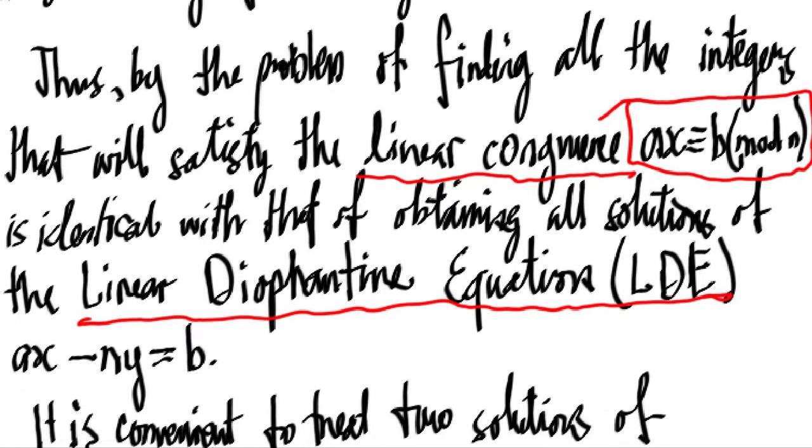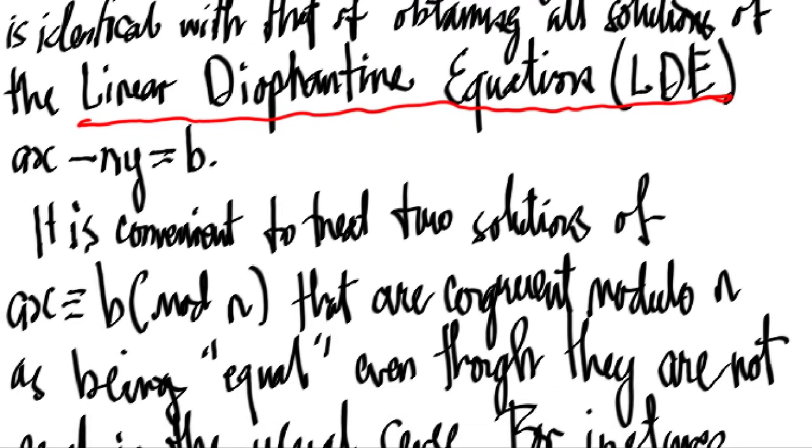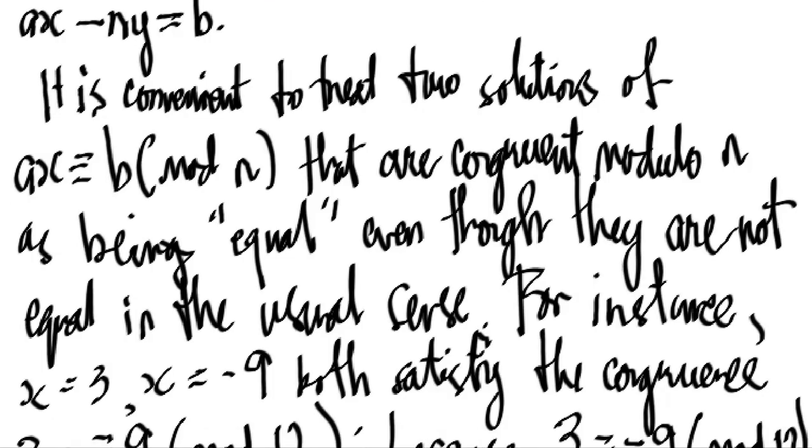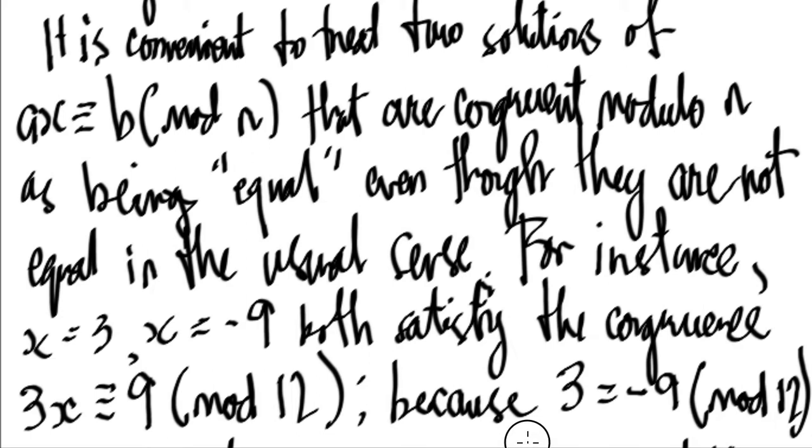Now notice that it is convenient to treat two solutions of ax is congruent to b mod n as being equal even though they are not equal in the usual sense of our equality.